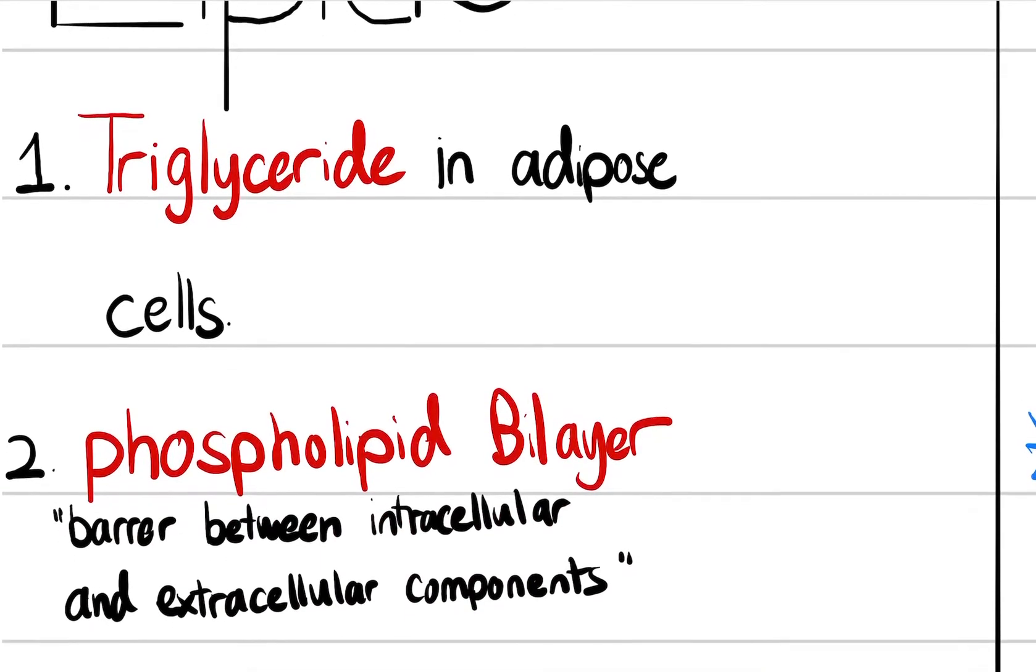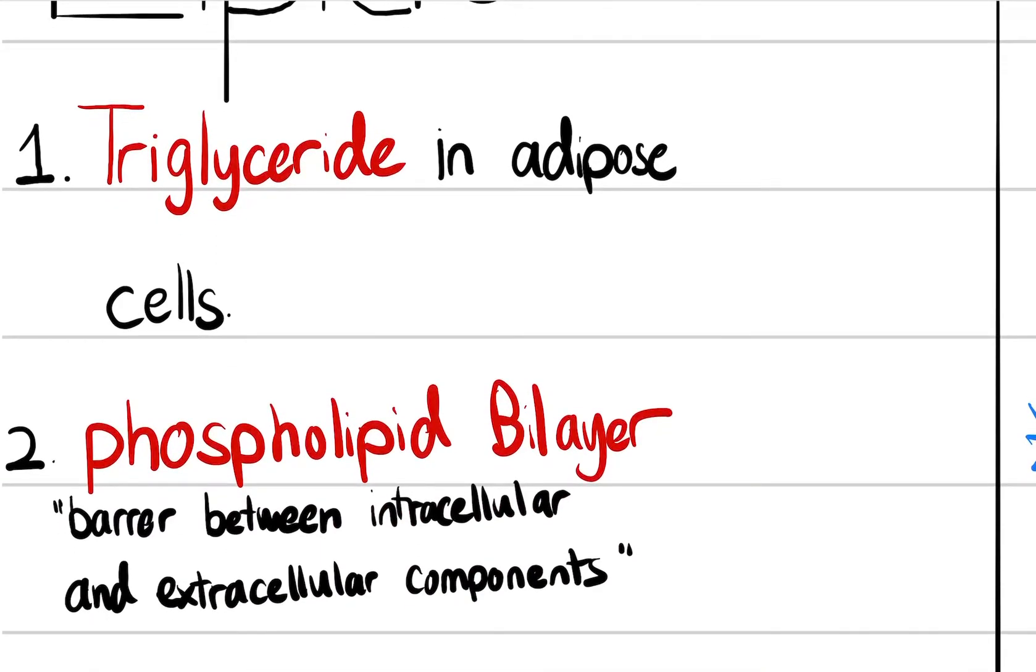The second thing is in phospholipid bilayers. The phospholipid bilayer is essentially responsible for creating that barrier for the outside and inside of the cell, and this allows exocytosis and endocytosis, which is the movement of bigger macromolecules inside and outside cells, which are lipid.